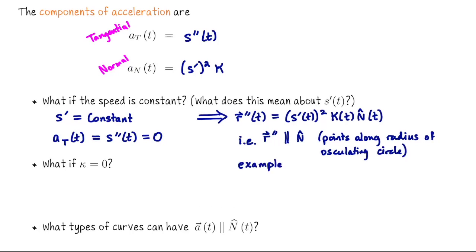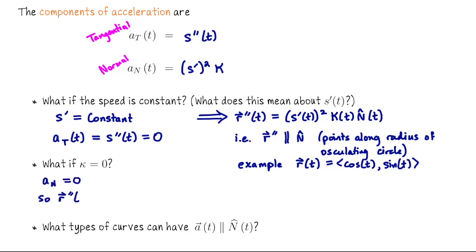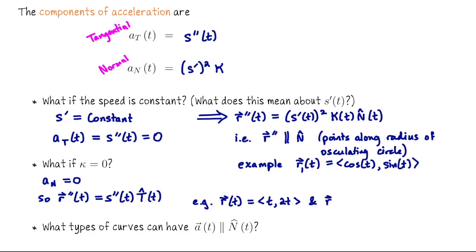If the curvature is zero (a straight line), the normal component of acceleration is zero, so r″ = s″·T̂. If speed is also constant, that's zero — as in the first straight-line parametrization. If speed is not constant, the acceleration points either with or against T depending on whether the curve is speeding up or slowing down — as seen in the second straight-line parametrization.